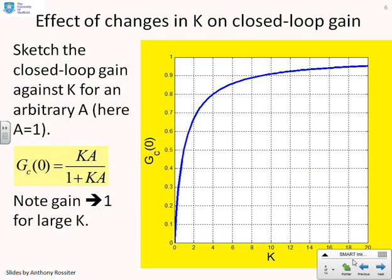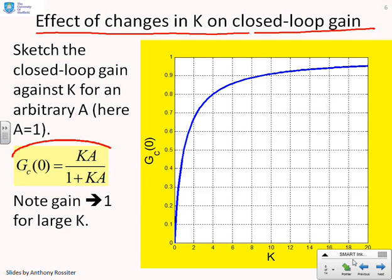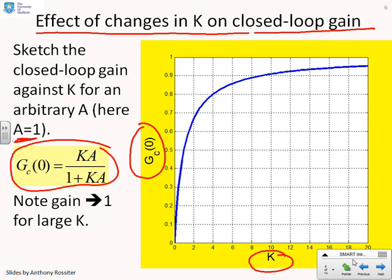First example then, what's the effect of changes in K on the closed-loop gain? Here's the expression: the closed-loop gain is KA over 1 plus KA. For convenience, we're going to assume A equals 1 and vary capital K. The horizontal axis is capital K, the vertical axis is the closed-loop gain.